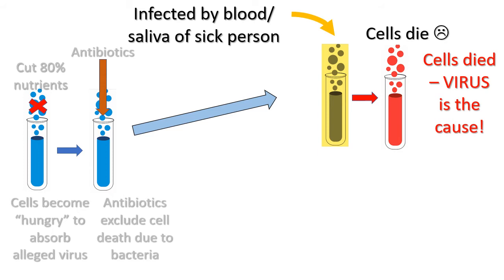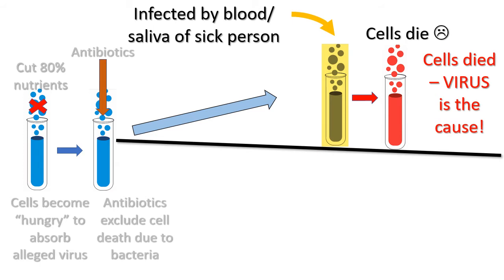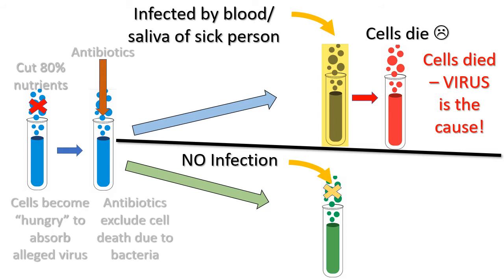But we haven't done yet because we haven't done the control experiment. We repeat the steps as we did in the first case, the only difference being that instead of infecting it with blood or saliva, we just add some neutral material — that means there is no infectious material added to the sample. Now there are two possible outcomes. One possible outcome is that the living cells do not die. The other outcome is that the cells would die anyway. That would prove that the viruses did not kill the living cells in the first instance. As a matter of fact, it has often been found that when hungry cells are treated with antibiotics, they die anyway. So they have to work around new methods in order to confirm that it's the virus which is the cause.